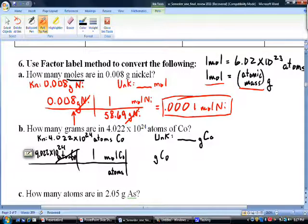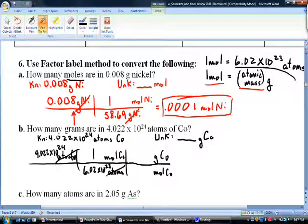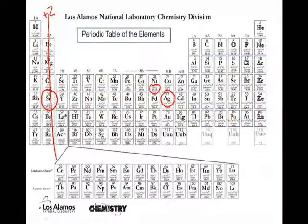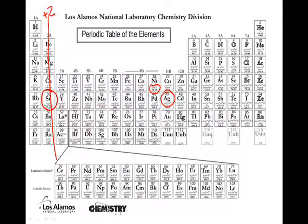So atoms of cobalt - we're starting here with 4.022 times 10²⁴. Now one mole of cobalt is how many atoms? Remember we want atoms to cancel out. What number goes down here with atoms? When we look back, we see 6.02 times 10²³.